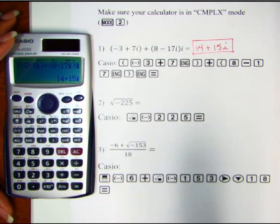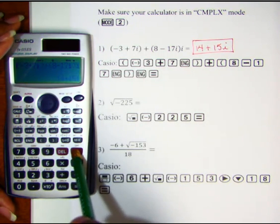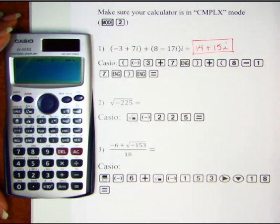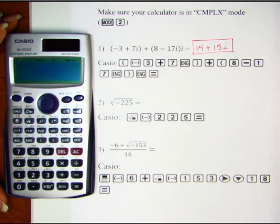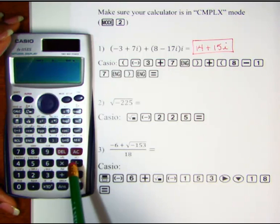Let's take a look at problem number two. Let's clear our screen and see what happens when we take the square root of a negative number. If your calculator was in computation mode or mode one, you would probably get an error if you tried to take the square root of a negative number. But since we are in complex mode, we should now get an answer.